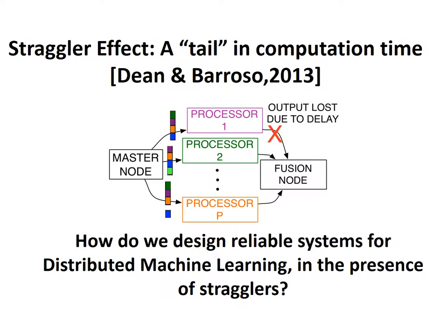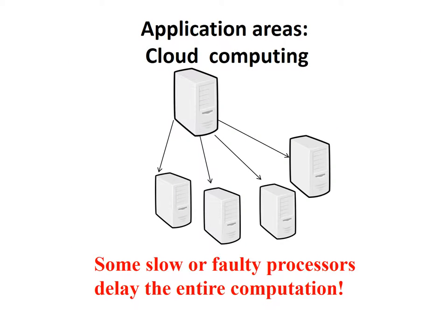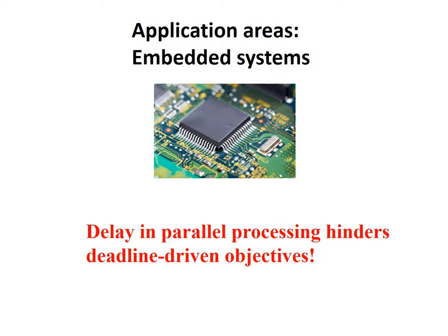How do we design reliable systems for distributed machine learning in the presence of stragglers? Distributed computing is often bottlenecked by a small fraction of slow processors called stragglers that reduce the speed of computation, because the fusion node has to wait for all processors to complete their processing. The straggler effect arises widely in cloud computing, such as in Amazon clusters, where some slow or faulty processors delay the entire computation. It is also observed in real-time embedded systems where a few delay-prone processors can hinder deadline-driven objectives.